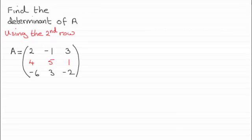In this example we've got to find the determinant of A using the second row 4, 5, 1. Just give you a moment to pause the video, and when you come back I'll show you the answer.